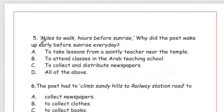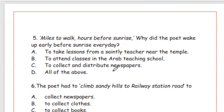Question 5: 'Miles to walk hours before sunrise' — Why did the poet wake up early before sunrise every day? Options: to take lessons from a saintly teacher near the temple, to attend classes in the Arab teaching school, to collect and distribute newspapers, or all of the above. He did all three of these things before sunrise, so the answer is Option D, all of the above.